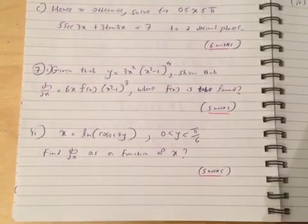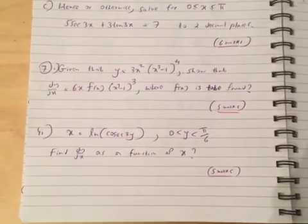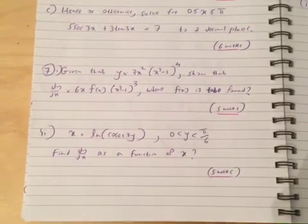Part 2: x equals ln cosec 3y, y between 0 and pi over 6. Find dy dx as a function of x.